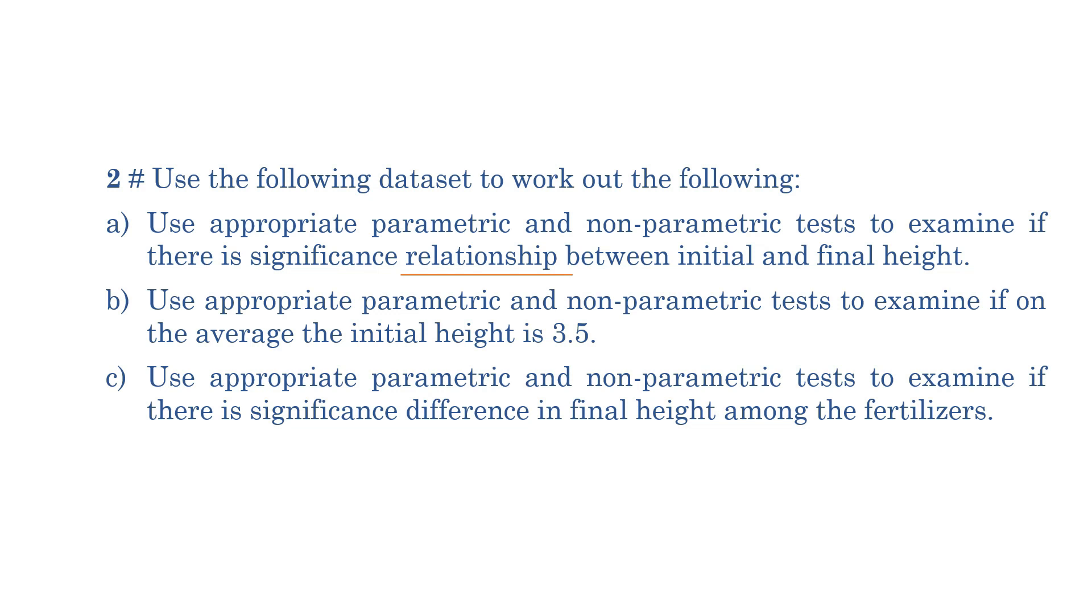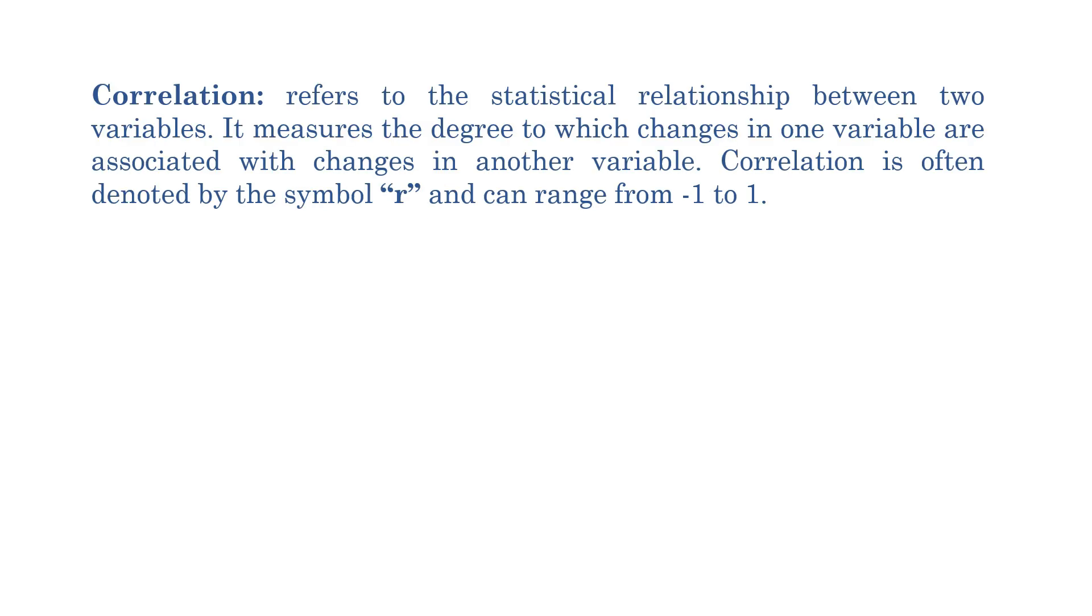For question 2a, we have the keyword relationship that shows us that we must perform a correlation test. Well then, what is correlation? Correlation refers to the statistical relationship between two variables. It measures the degree to which changes in one variable are associated with change in another variable. Correlation is often denoted by the symbol R and can range from minus 1 to 1.